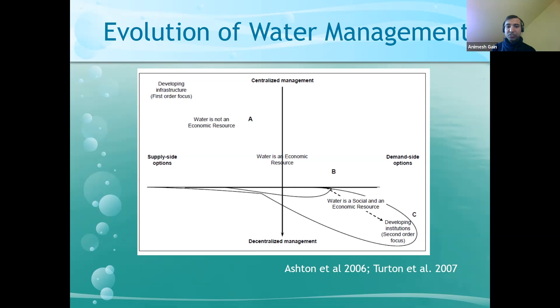Then slowly it moves to C. In that case, institutional reformation starts — for example, a decentralized form of governance institution.